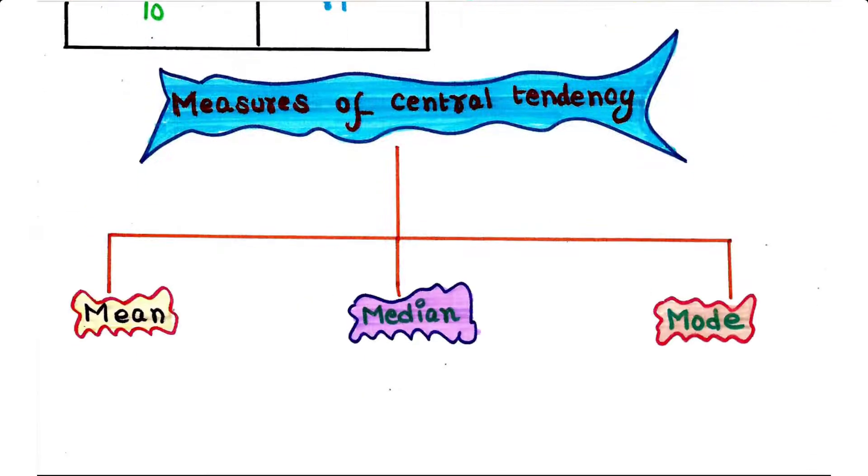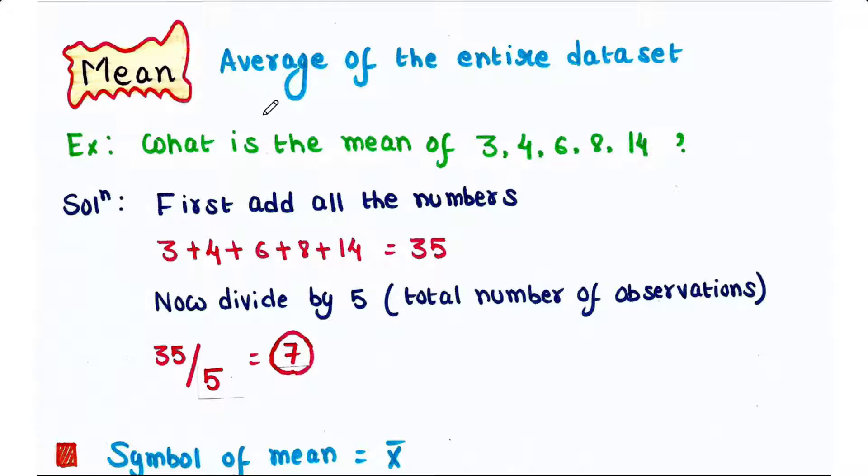Now let's talk about the measures of central tendency. So the central tendency of a dataset can be represented using three measures: mean, median, and mode. So let's talk about mean today. Mean is defined as the average of the entire dataset.